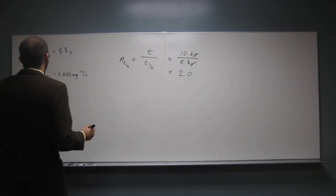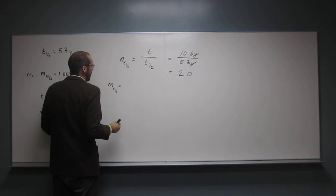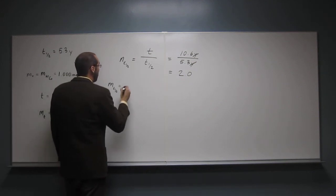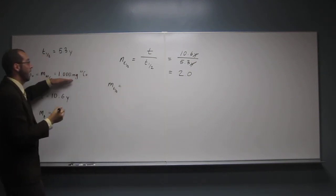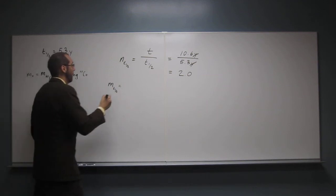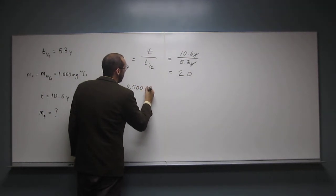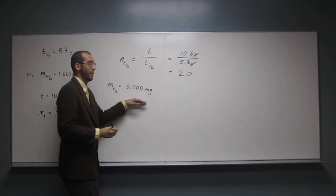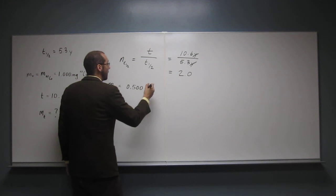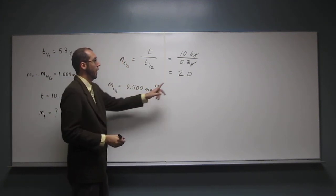So the mass at t one half, so half of the original, is going to be, well, if we start out with one milligram, what's half of that? 0.5, yeah, 0.5 milligrams. So 0.500 mg specifically of cobalt-60. Well, that's after one half-life,